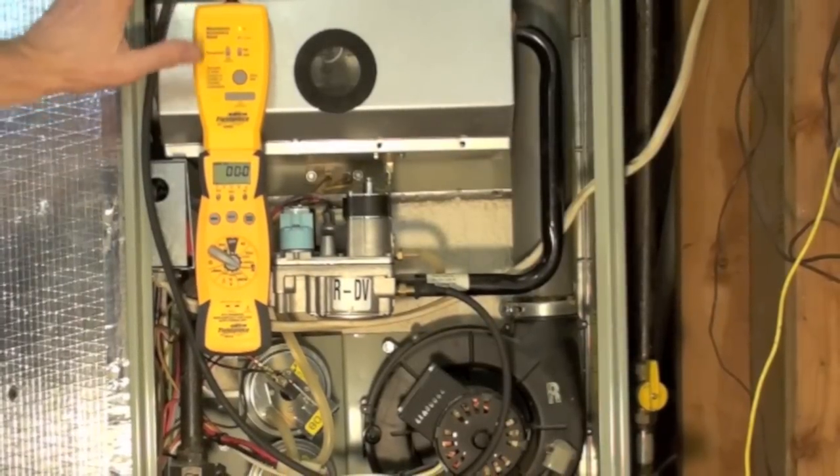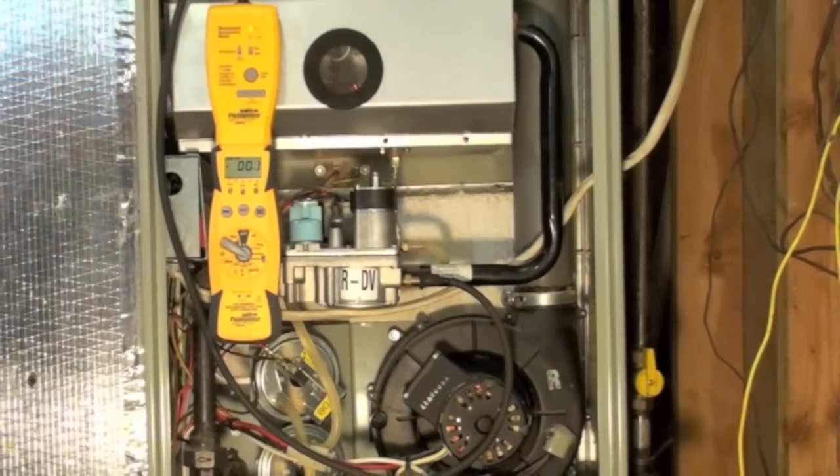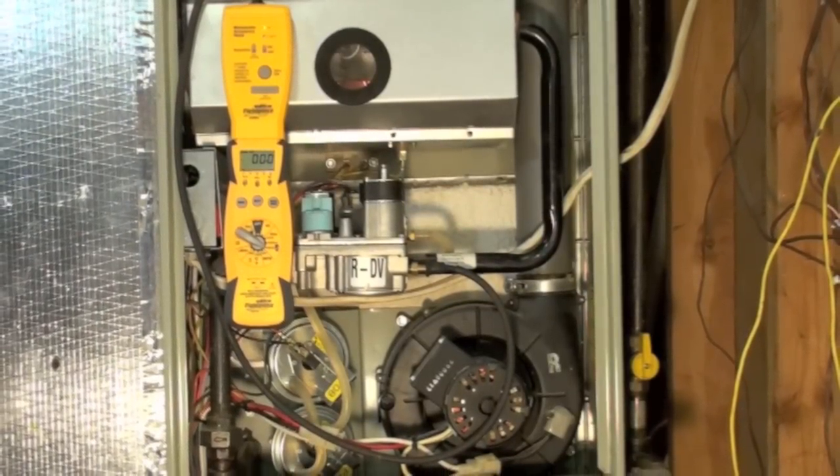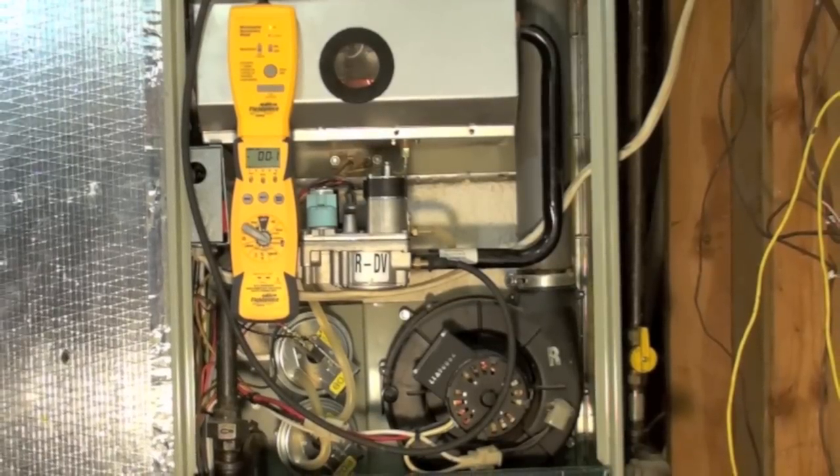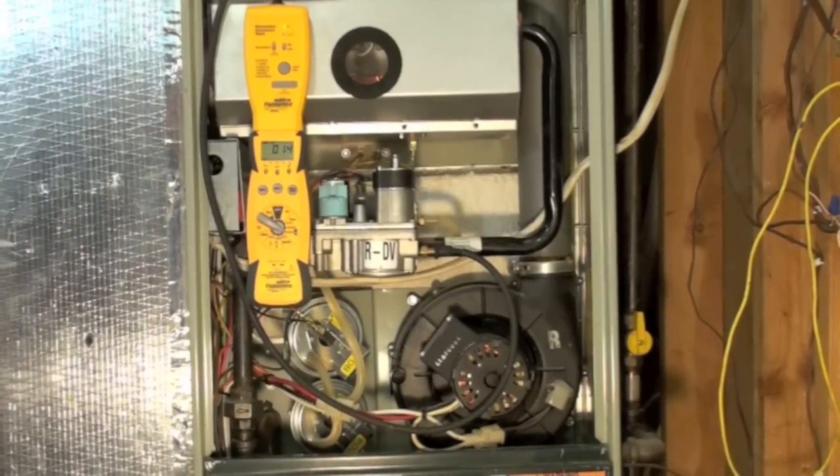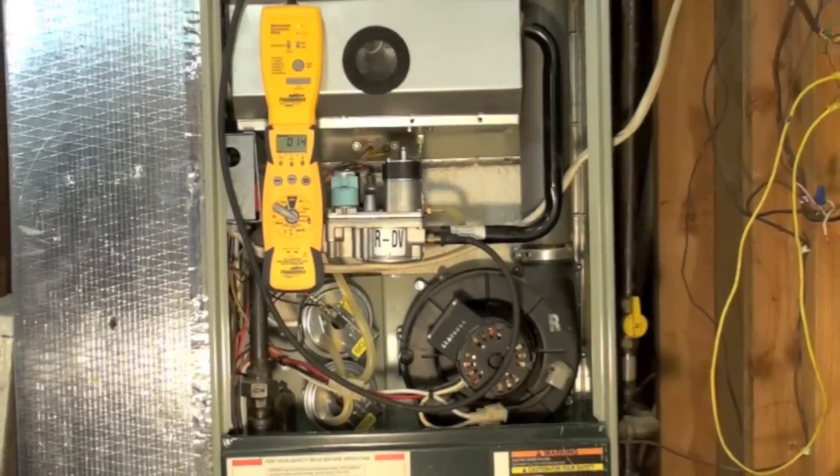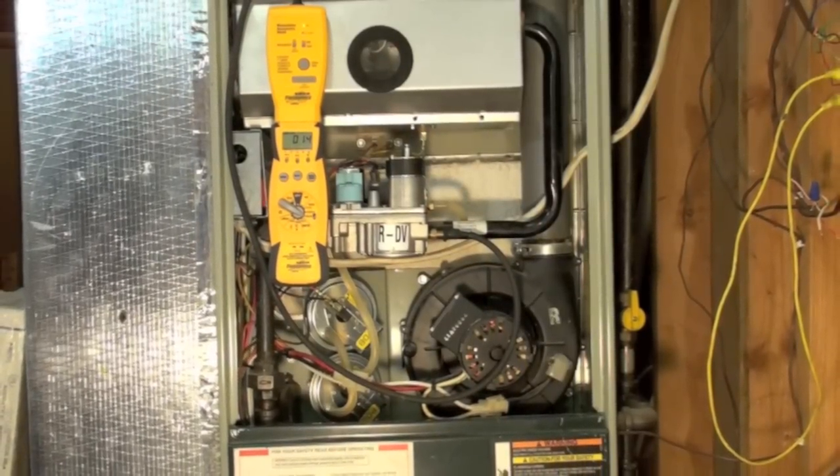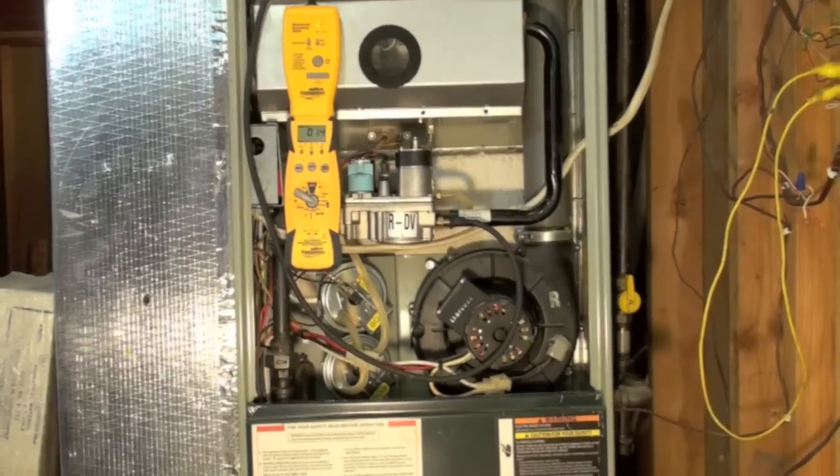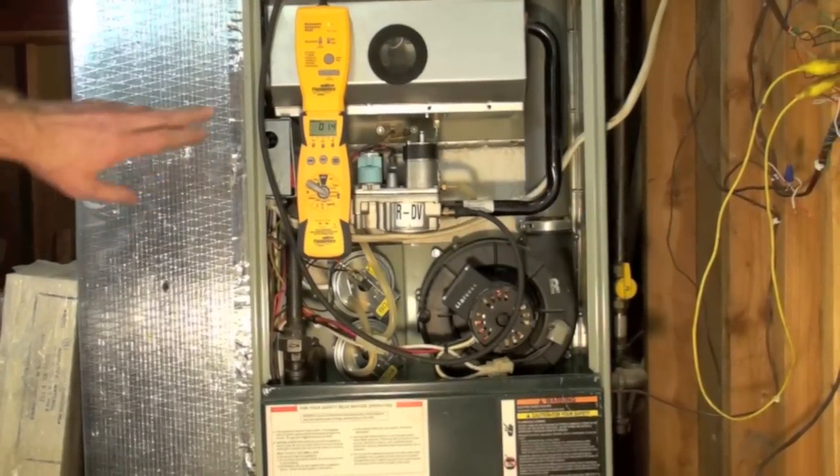Here we have the field piece manometer. It's set now to tenths of an inch. It can be set to hundredths of an inch water column. Should be coming on here pretty soon. There we go. It's on and it is showing 1.4 inches water column. It's a little bit different than the others. We've gone from 1.25 to 1.45 but it seems to be pretty much in the same area.